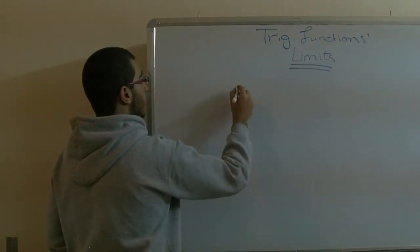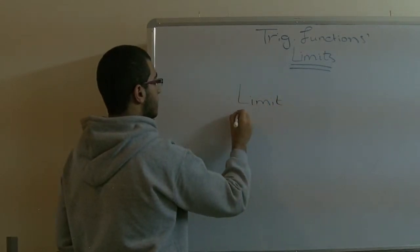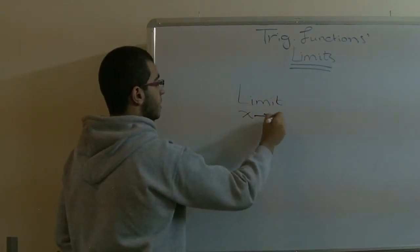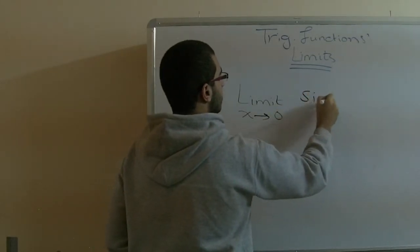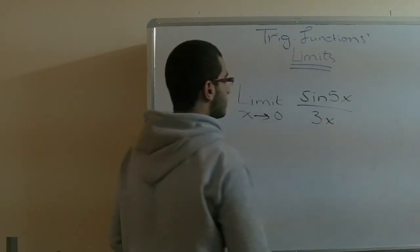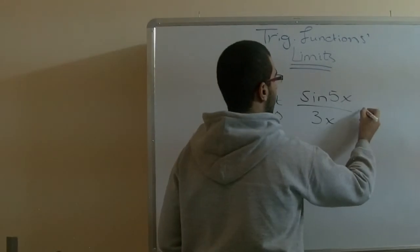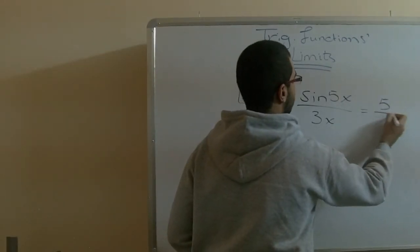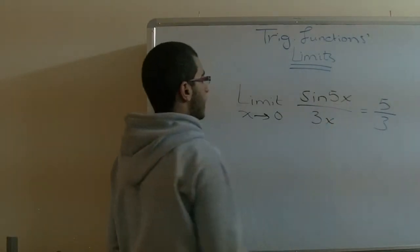So we have the limit of x approaching zero, and we have sine 5x over 3x. This one would be 5 over 3. a over b, and the sine x goes with the x.